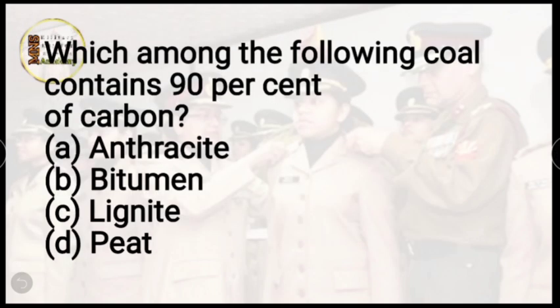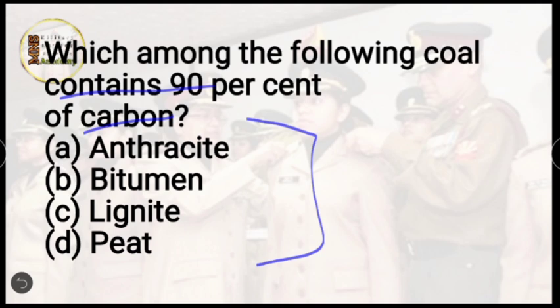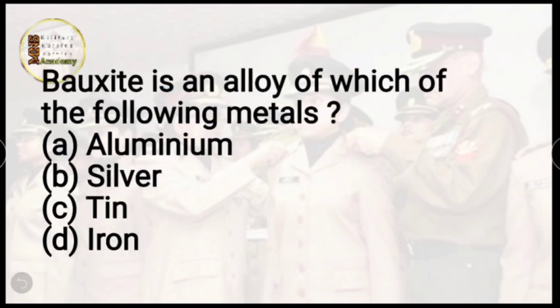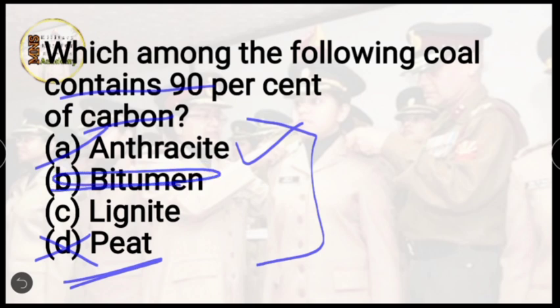Question 3: which among the following coal contains 90% carbon? Options are anthracite, bituminous, lignite, or peat. The correct answer is option A, anthracite. Anthracite is the best quality coal with the highest carbon content. Between the types, bituminous is used in road making.